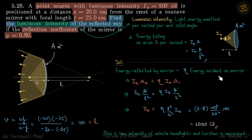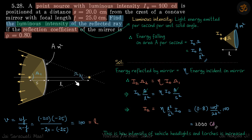Now let's calculate the intensity. Energy reflected by the mirror is eta times energy incident on the mirror. Energy incident is i-naught times omega-1, and energy reflected is i2 times omega-2. Omega-1 is A divided by s squared, and omega-2 is A divided by l squared.